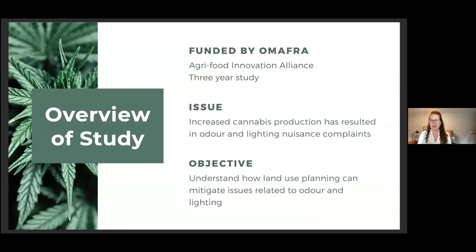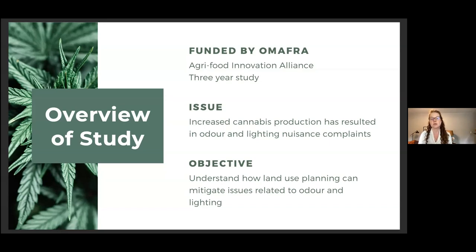This evolving landscape of regulations, the increasing cannabis production, and the land use conflicts and research gaps bring us to the importance of this research project. One of the key objectives is to understand how land use planning can mitigate issues related to odor and lighting. Other objectives include supporting economic development and continued expansion of the cannabis sector in Ontario, and identifying and developing planning tools that address odor and lighting issues to bring consistency to municipal decision making and land use planning approvals related to cannabis production in Ontario. Research is funded by the Ontario Agri-Food Innovation Alliance program.